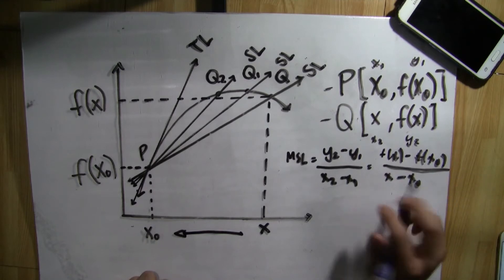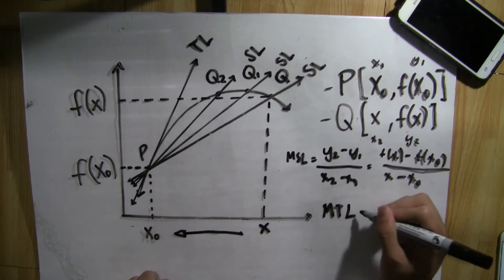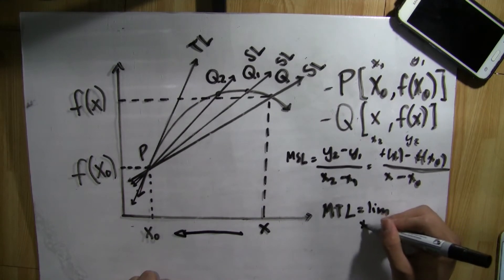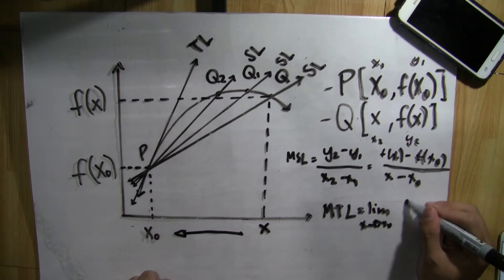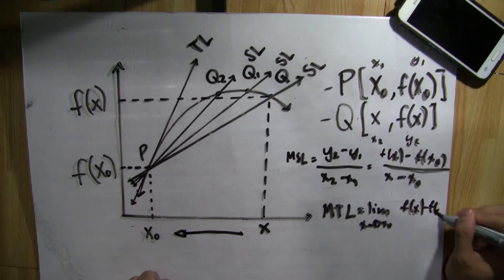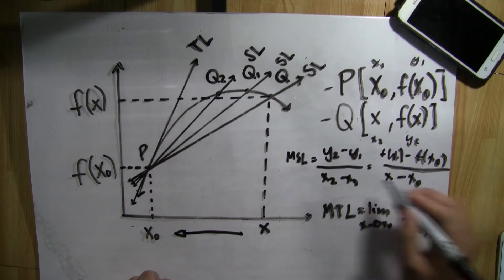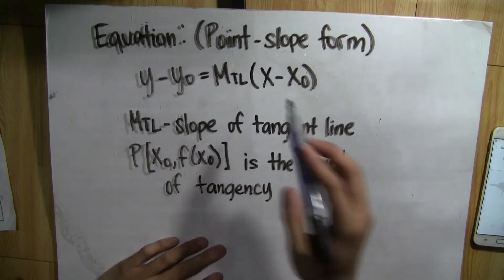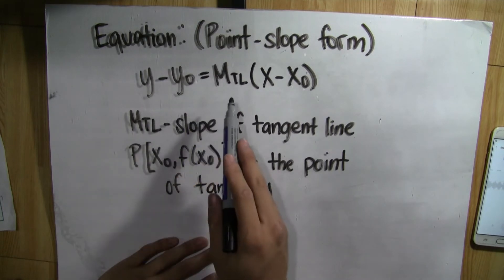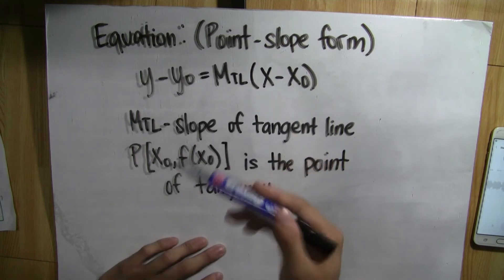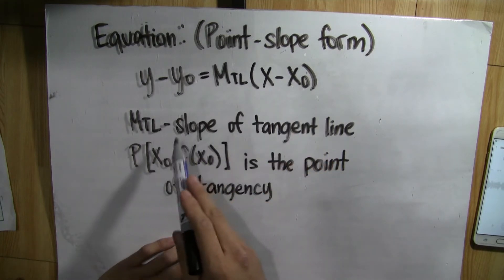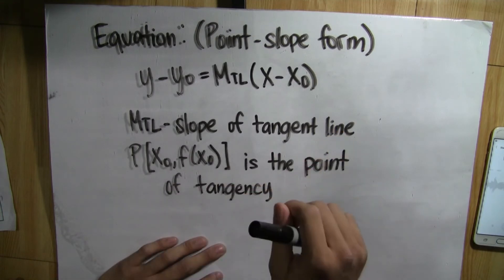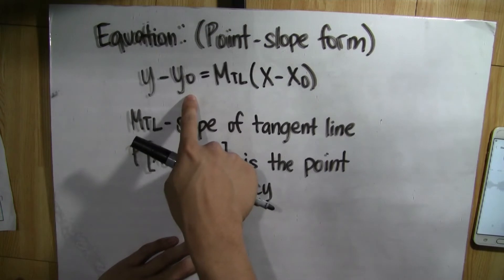This is the formula to get the slope of the secant line. Now we can remember that the tangent line is the limiting position of all secant lines on the graph. Therefore, the slope of the tangent line is the limit of the slope of the secant line, which is F of x minus F of x-sub-0, all over x minus x-sub-0, as x approaches x-sub-0. The equation of the tangent line in point-slope form is Y minus Y-sub-0 equals M-sub-TL multiplied by the difference of x and x-sub-0, where M-sub-TL is the slope of the tangent line, and the coordinates of the point of tangency are x-sub-0 and Y-sub-0. Also, Y-sub-0 can be denoted as F of x-sub-0.